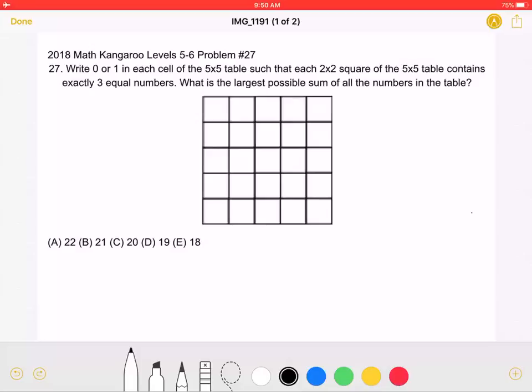What is the largest possible sum of all numbers in the table? A. 22, B. 21, C. 20, D. 19, or E. 18.